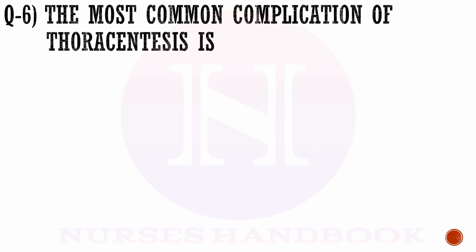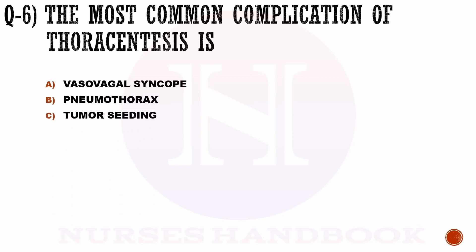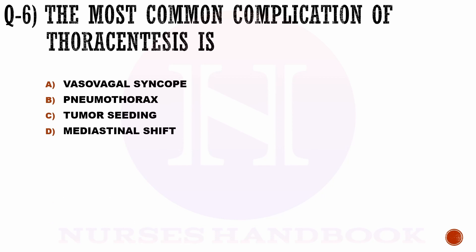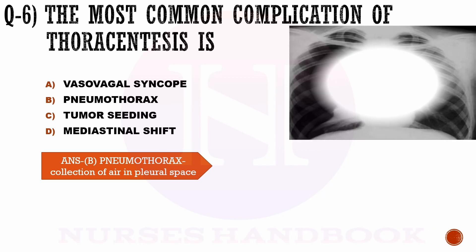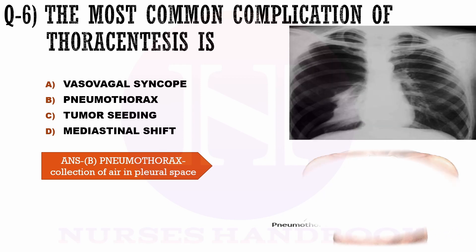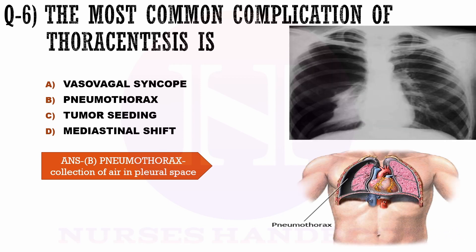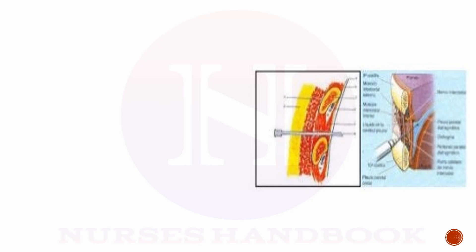Question number 6. The most common complication of thoracentesis is: a) vasovagal syncope, b) pneumothorax, c) tumor seeding, and d) mediastinal shift. The correct answer is option b, pneumothorax. Pneumothorax means the collection of air in the pleural space. It is one of the common complications and frequently requires chest tube insertion.